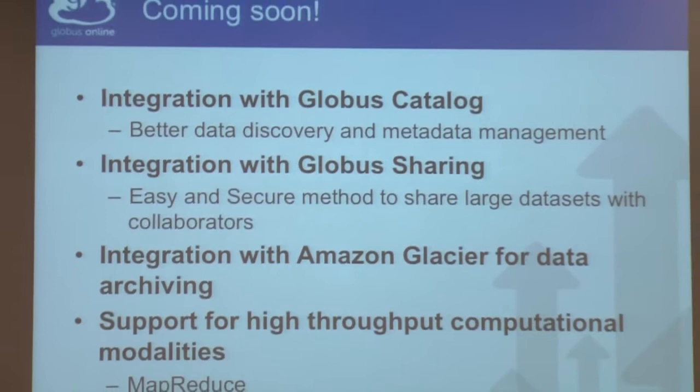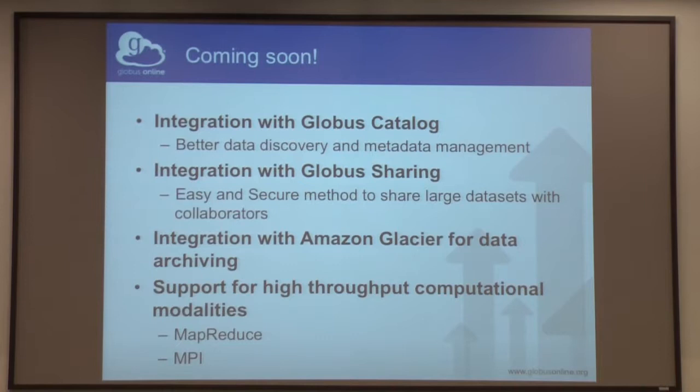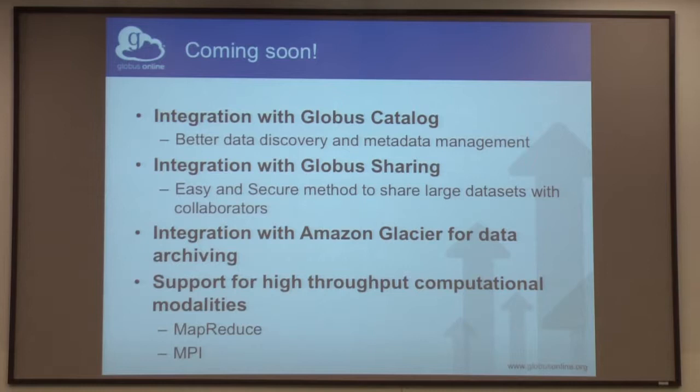These are some of the things we're working on. We're going to integrate with Globus Catalog and with Globus Online sharing. We also have some plans on using other Amazon services like Glacier and S3 so that we can provide tiered storage for archiving purposes for researchers. The other thing I'm keen on is providing other computational modalities like MPI and MapReduce to the Globus Genomics platform, so that we can automate the process of analysis using new and better computational modalities, automatically selecting the right one based on the kind of analysis the researcher wants to do.